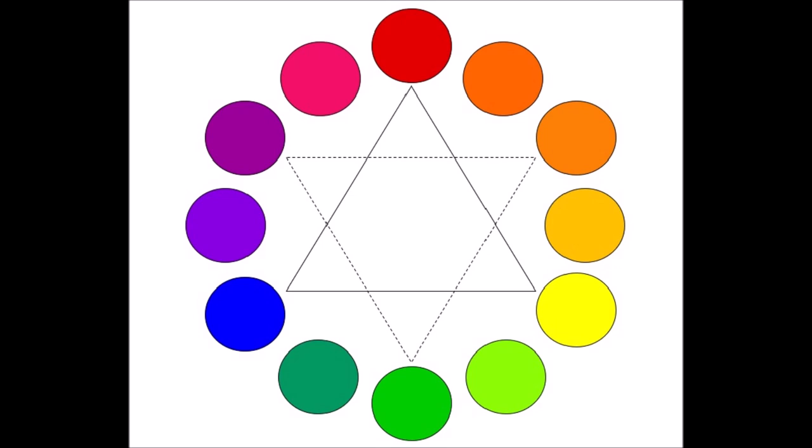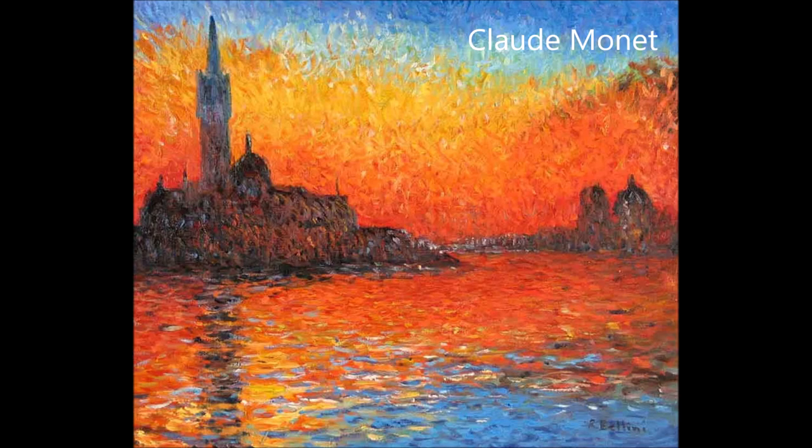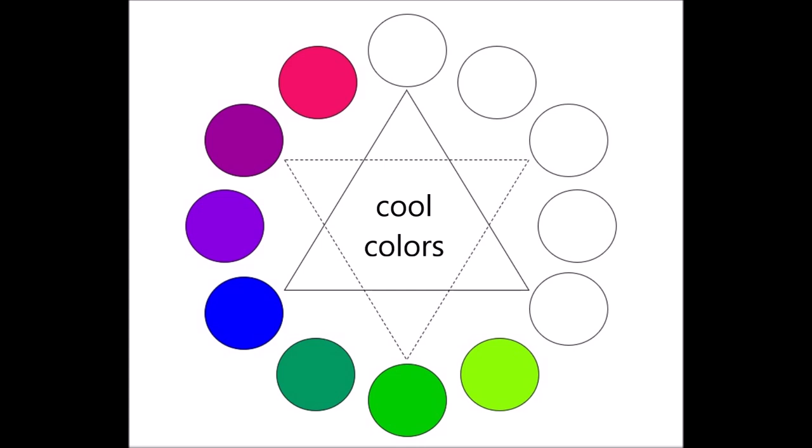The color wheel can be divided by temperature into warm and cool halves. A warm color scheme includes red, red-orange, orange, yellow-orange, and yellow, and can be used to create a vivid, energetic composition.